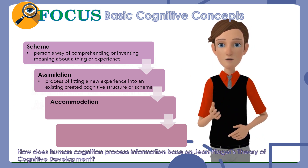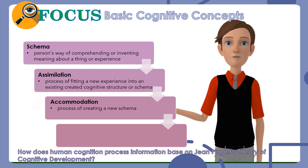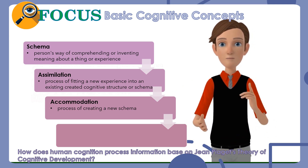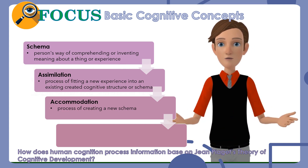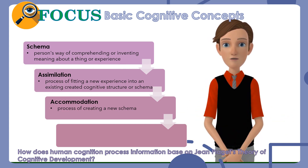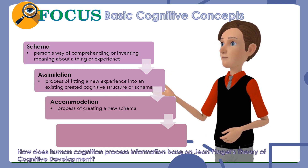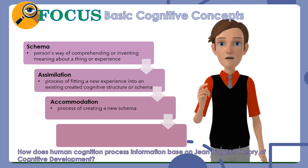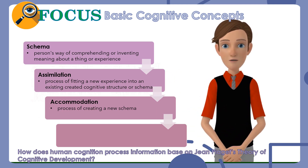Accommodation: This is the process of creating a new schema. If the same child sees another animal that looks a little like a dog but somehow different, he might try to fit it into his dog schema and say, 'Look mommy, what a funny looking dog. Its bark is funny too.' Then the mommy explains, 'That's not a funny looking dog — that's a goat.' With mommy's further descriptions, the child will now create a new schema: that of a goat, adding a new file to his filing cabinet.